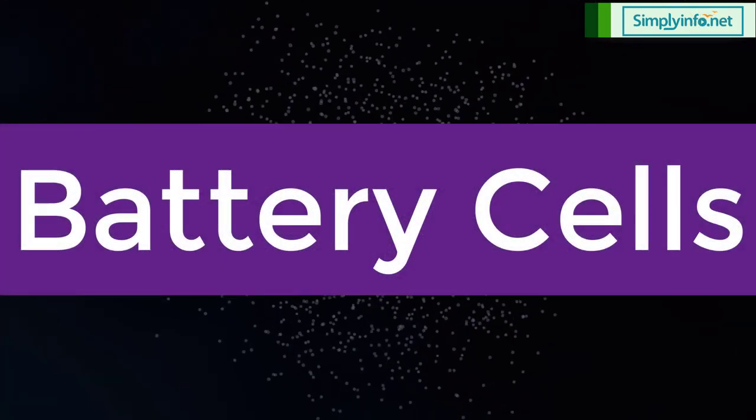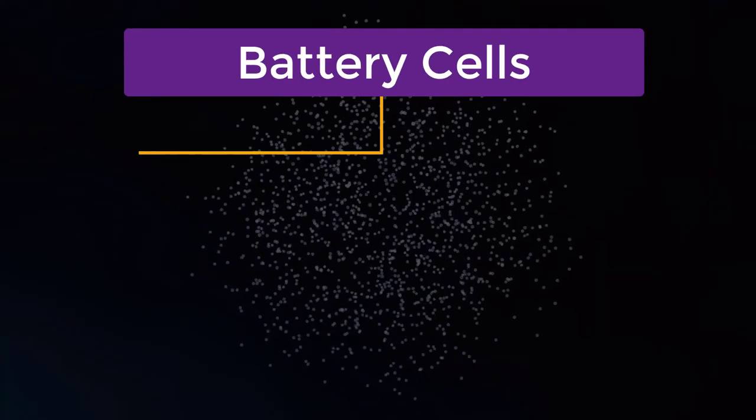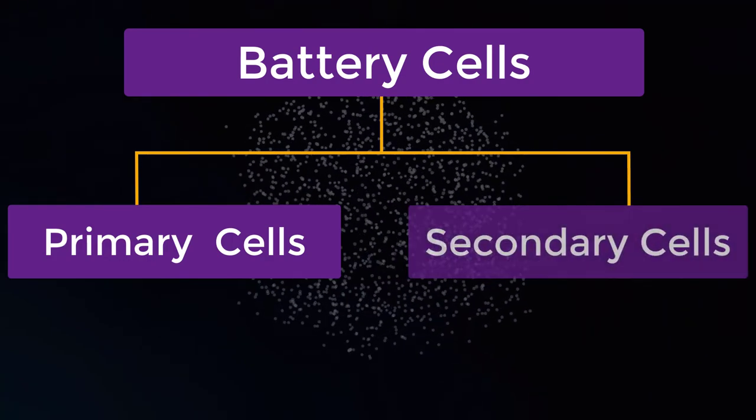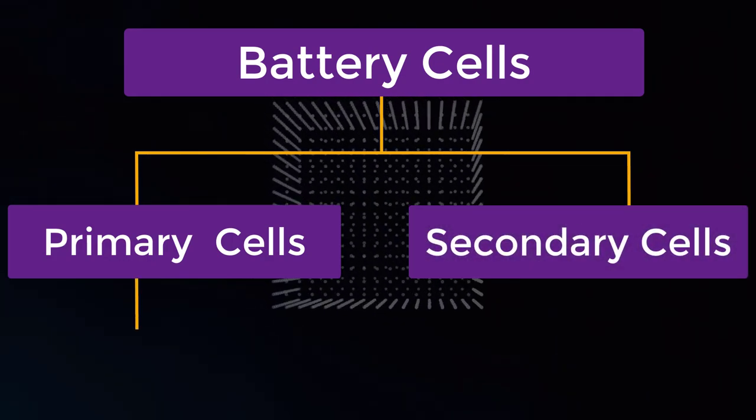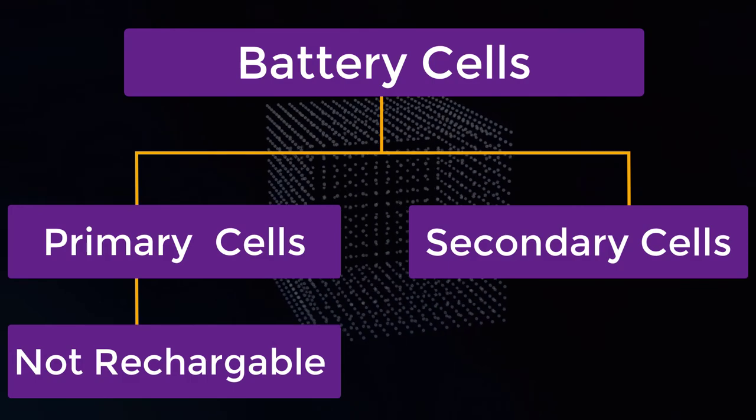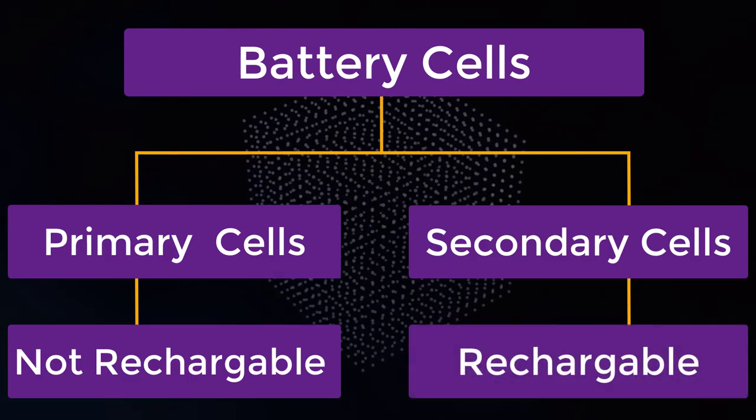The battery cells are classified into two types: primary cells and secondary cells. The primary cells are not rechargeable type, but the secondary cells can be rechargeable.